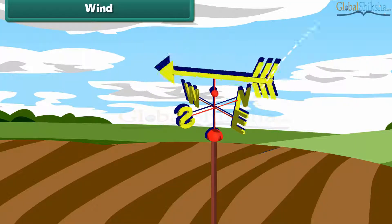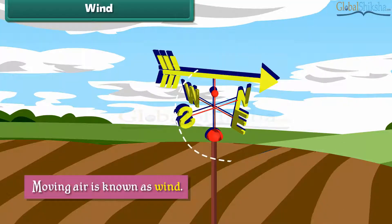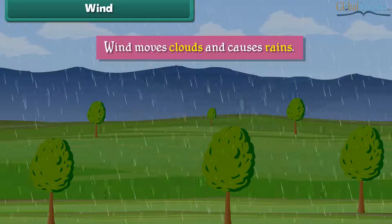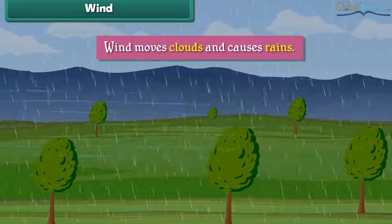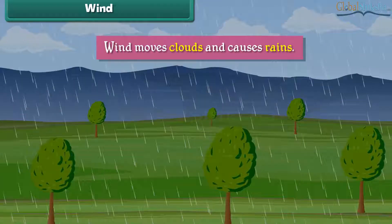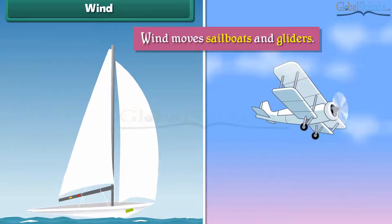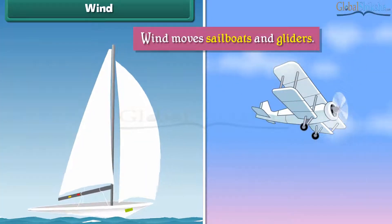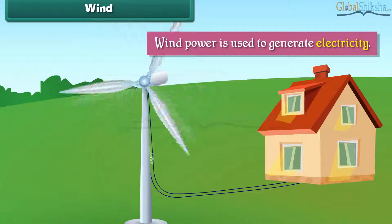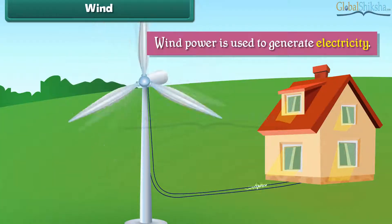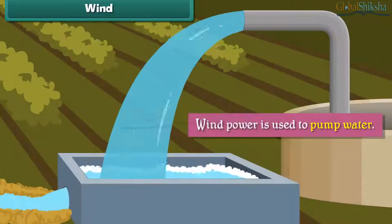Wind: Moving air is known as wind. Wind moves clouds and causes rain. Wind moves sailboats and gliders. Wind power is used to generate electricity and to pump water.